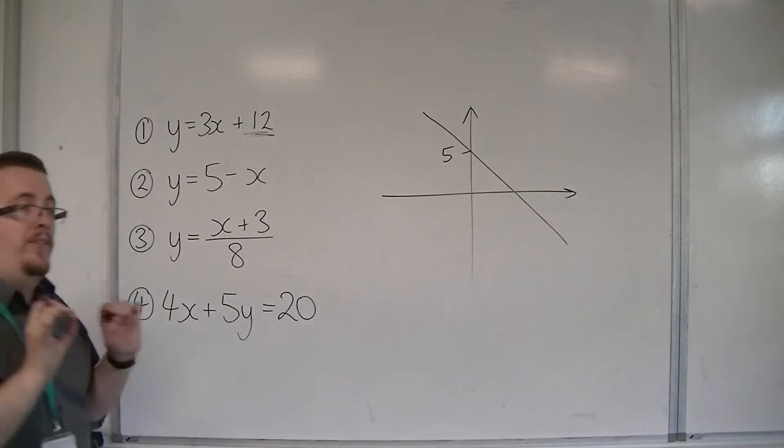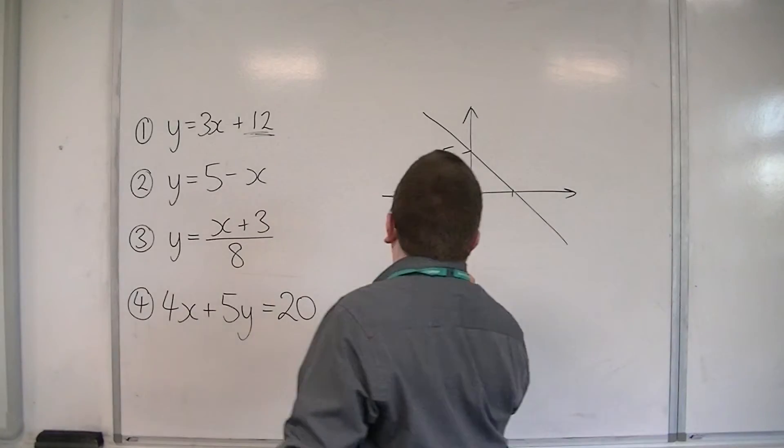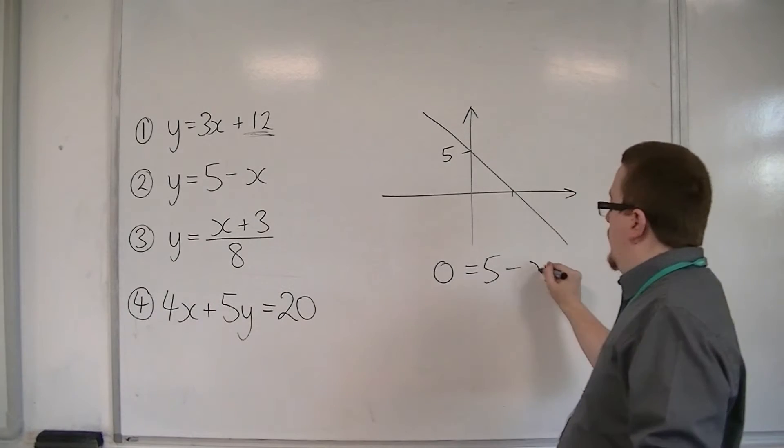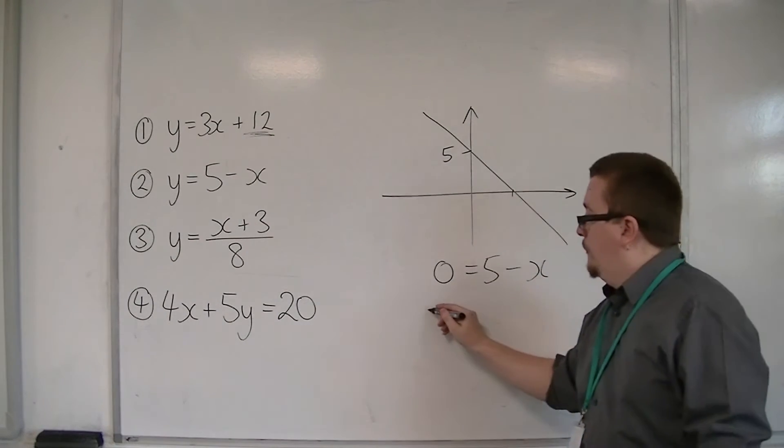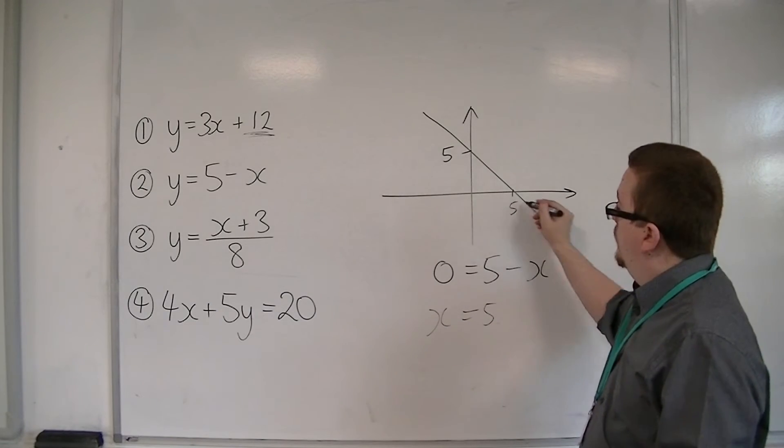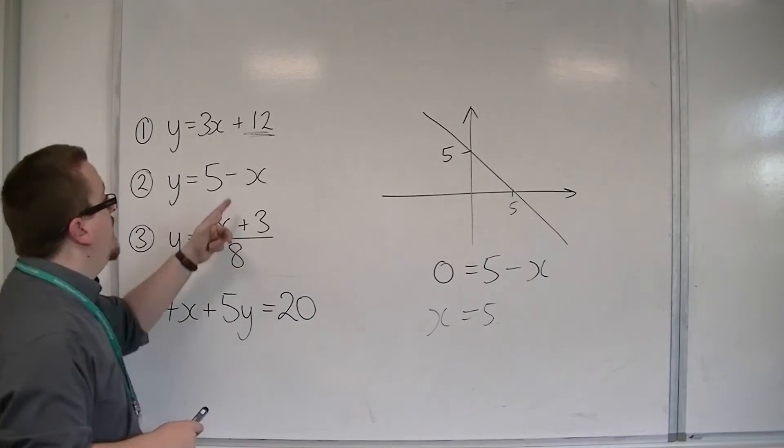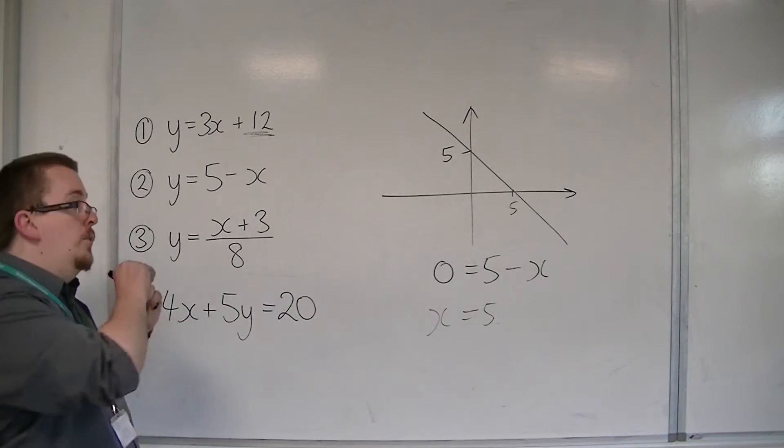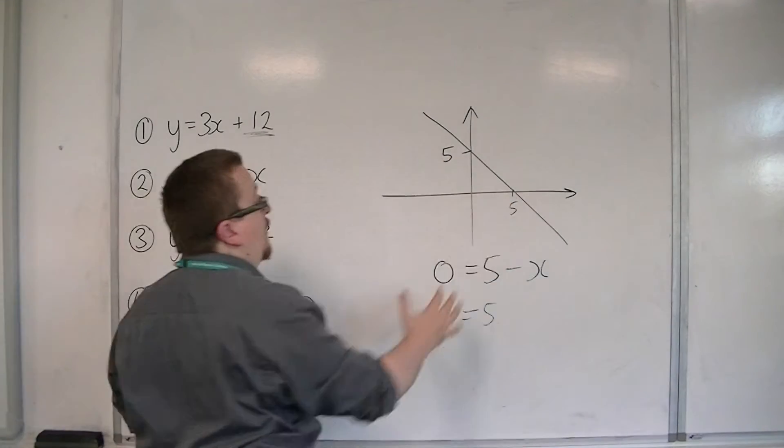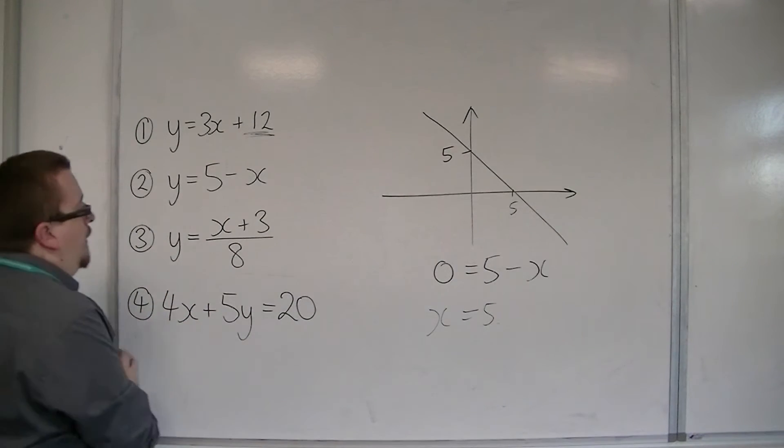When y is 0, that will allow us to find that point. So 0 is equal to 5 minus x, and so x must be equal to 5, adding x to both sides. You should also be able to pinpoint that because the gradient is minus 1, it should go through 5, 5 on the axis there. So that's number 2.